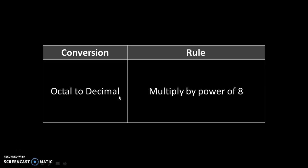Octal to decimal. Multiply by power of 8. We are multiplying by 8 because the base of the octal number system is 8.